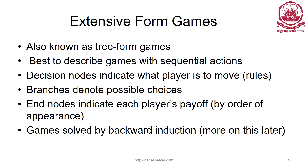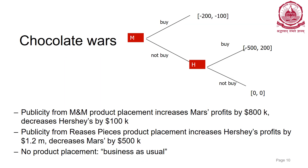Extensive form games, also known as tree form games, are best used to describe games with sequential actions. Decision nodes indicate which player is to move, branches indicate possible choices, and terminal nodes indicate each player's payoff. The game is solved by backward induction. If I represent the chocolate war game as a tree, this is how it looks — the tree can be drawn horizontally or vertically, as long as it is a tree.